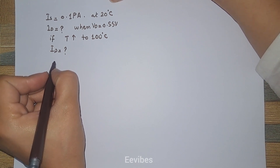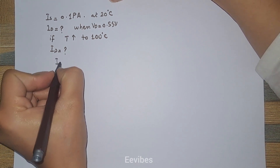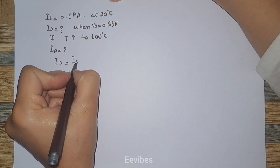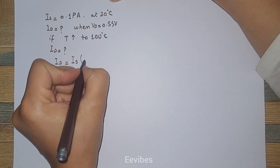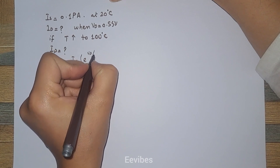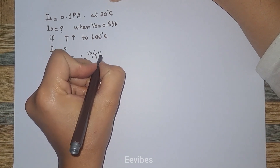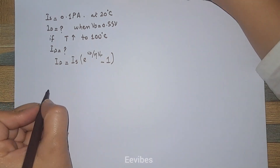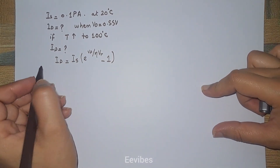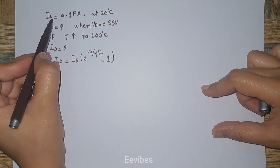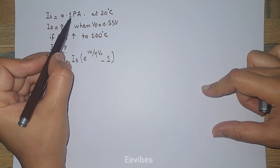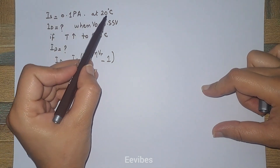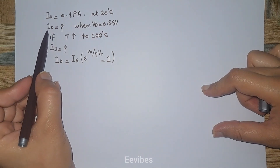So far we have studied about the diode current equation which is given as ID = IS × (e^(VD / ζVT) − 1). In this particular problem, you are given the saturation current IS equal to 0.1 pico amperes at 20 degrees centigrade.